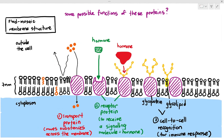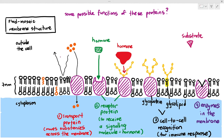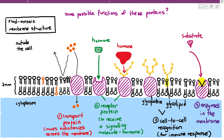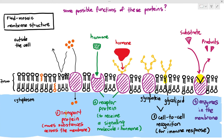The final function of membrane proteins is they can also act as enzymes. Enzymes reduce activation energy by binding to substrates temporarily, forming the enzyme-substrate complex, and converting it into products. So, these are the four functions of membrane proteins: transport proteins, receptor proteins, cell-to-cell recognition during immune response, and enzymes.